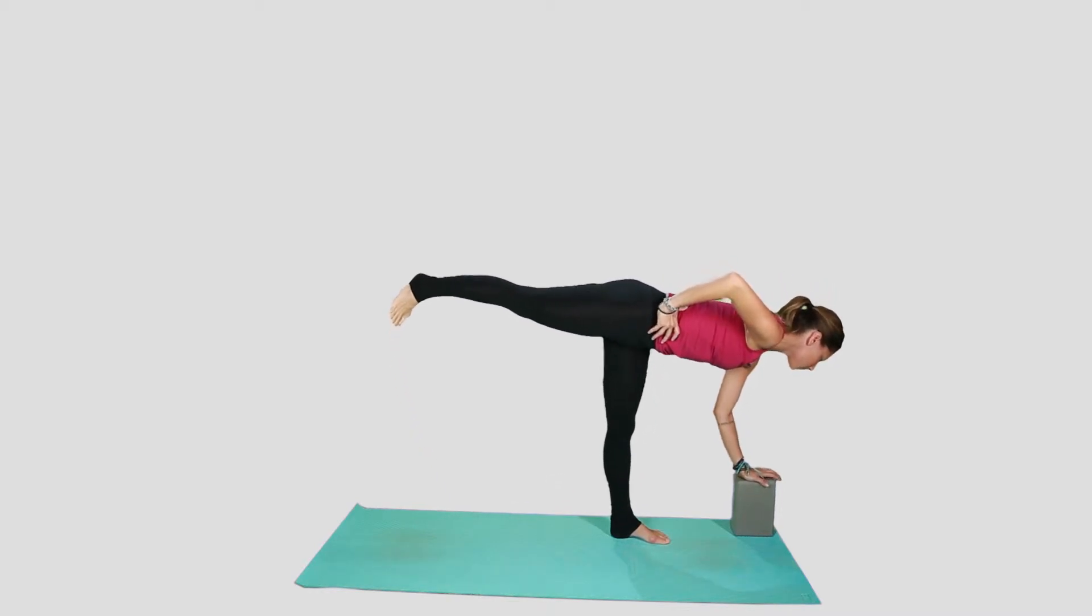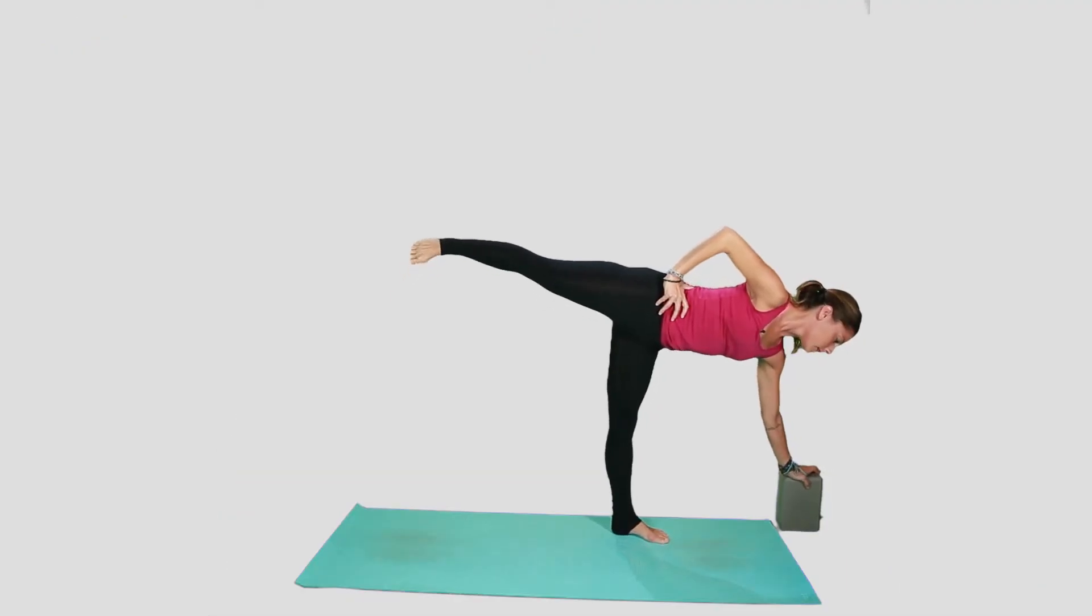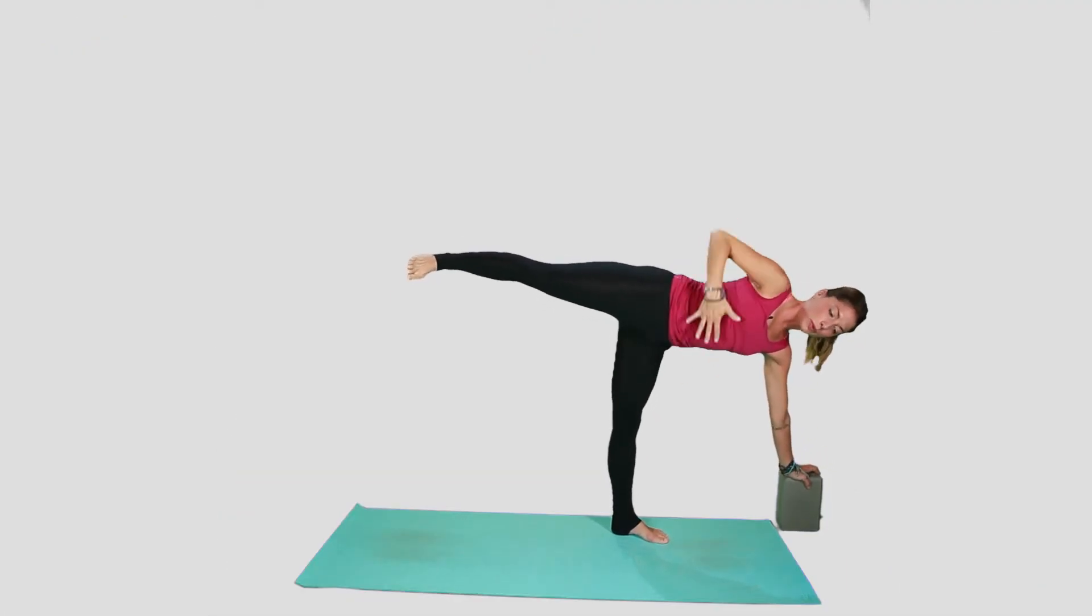So with our balancing half moon, we're going to kind of go through our warrior three into our balancing half moon. You can adjust this block once you get down here, but we want to stay balanced here on this left leg. We want to open into the hips here to the long edge of the mat. So we're going to be opening to the opposite wall here.